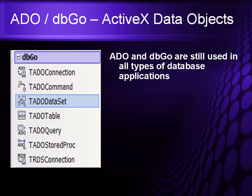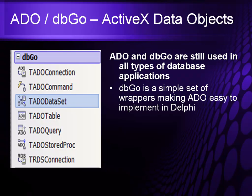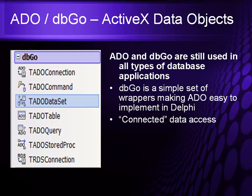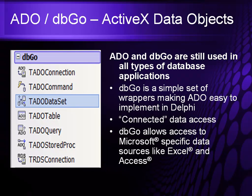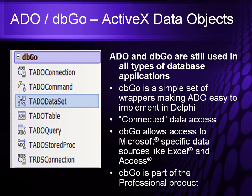ADO and DBGO — ActiveX Data Objects — are still used today for all types of databases and applications. DBGO is a simple set of wrappers making ADO easy to implement in Delphi. It is a connected data model, meaning you connect to the database, work while connected, and then disconnect. DBGO allows access to Microsoft-specific data sources like Excel and Microsoft Access. DBGO is part of the professional edition and above.